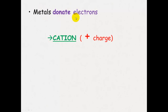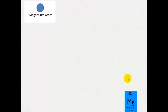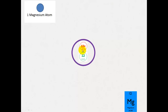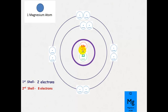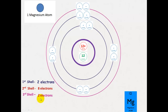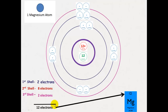Metals donate electrons to form cations which have a positive charge. For instance, magnesium will donate two electrons to get a positive charge. If we look at magnesium, we can tell by the atomic number that there are 12 protons, which means in a neutral atom there are 12 electrons — two in the first shell, eight in the second shell, two in the third shell. Which means it's got two valence electrons, giving it a configuration of 2, 8, 2.